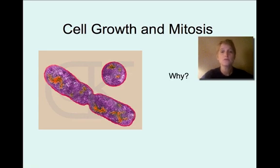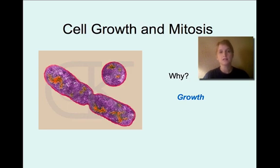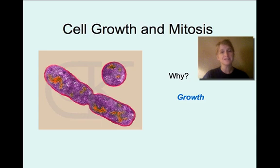Let's start off with talking about why we would need cell growth. The first reason is growth of the organism. We need lots and lots of cells in our body — we can't have just one big huge cell. We need lots of cells doing their jobs. Cells are more efficient when they're smaller, so in order to grow, organisms need cells to continually do cell division and make new cells.